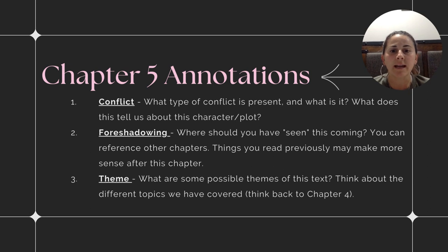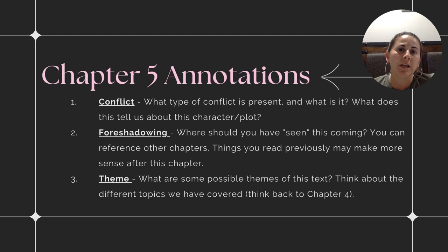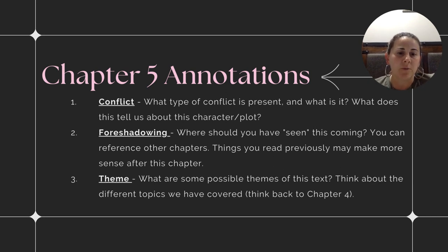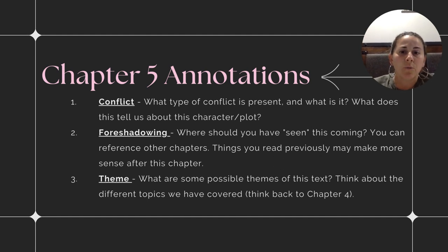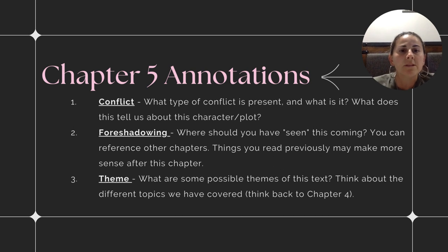One, we're looking at conflict in the chapter. With any text, you're looking at two different types of conflict: whether it's an internal conflict, meaning a conflict within the character, or an external conflict — maybe the character versus nature, maybe the character versus another character. We're looking at what type of conflict is present in Chapter 5, what is the specific conflict, and what does this tell us about the character, characters, or the plot.